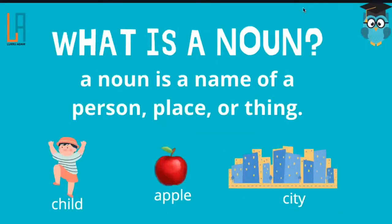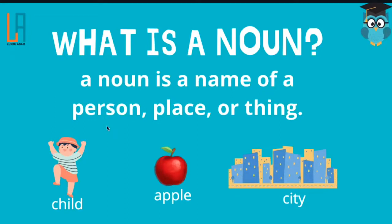So to begin with, we have to identify what is a noun. A noun is a name of a person, place, or thing. For example, we have child, apple, or city. So these are names of something or someone. So that is a noun. Anything that has a name, that is a noun.